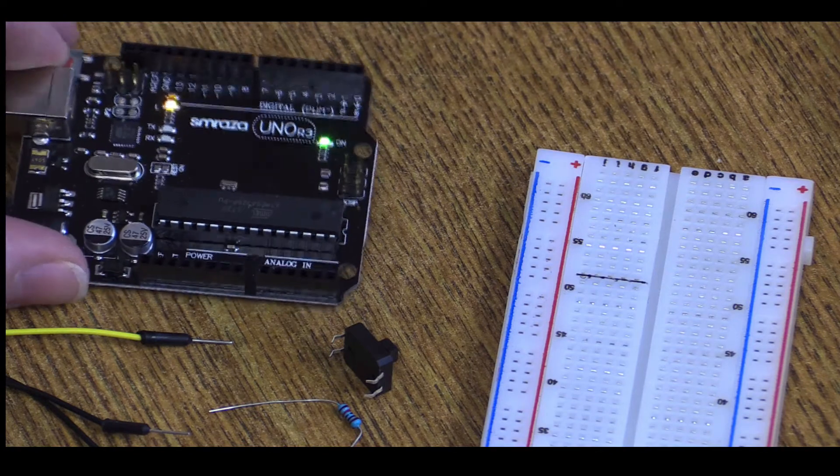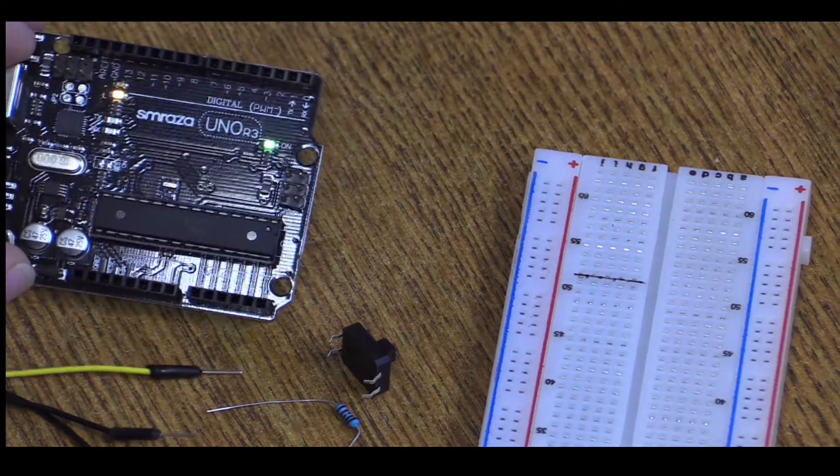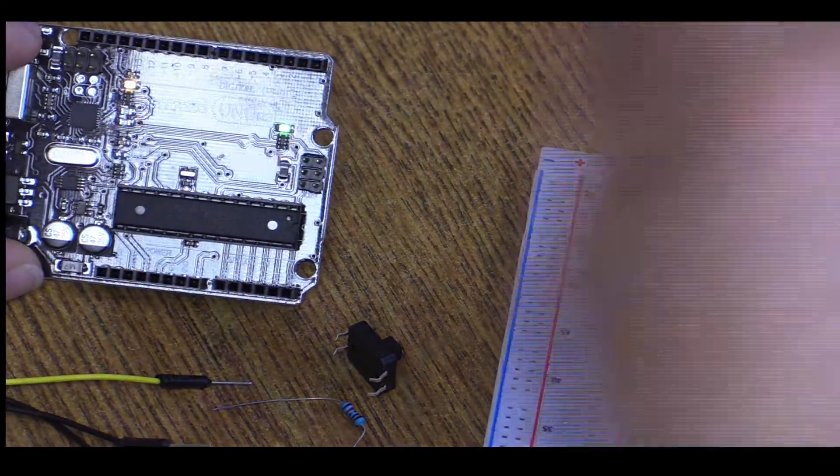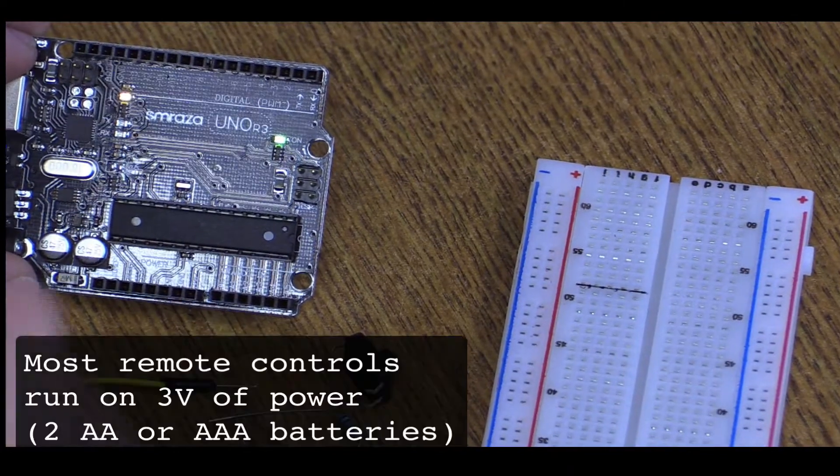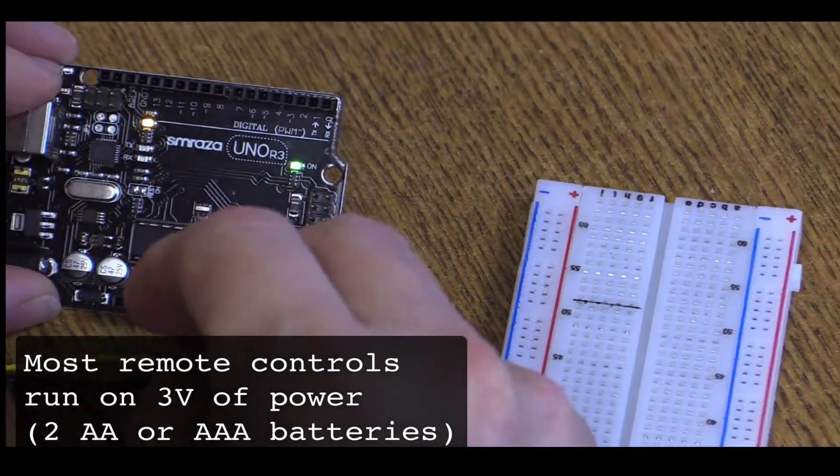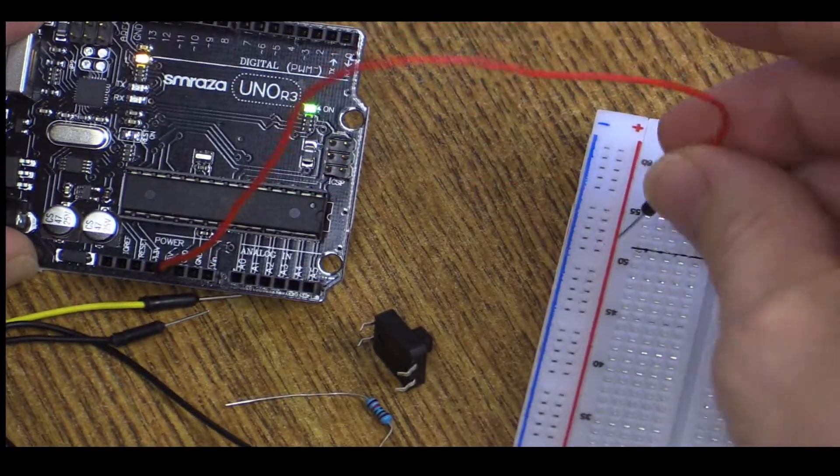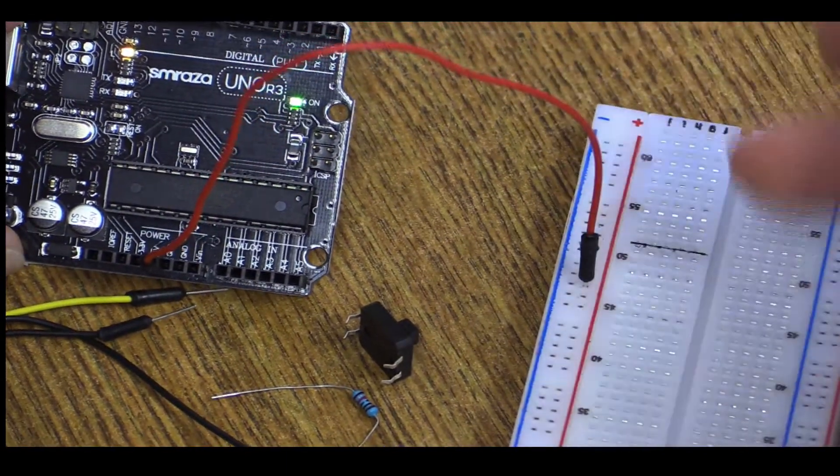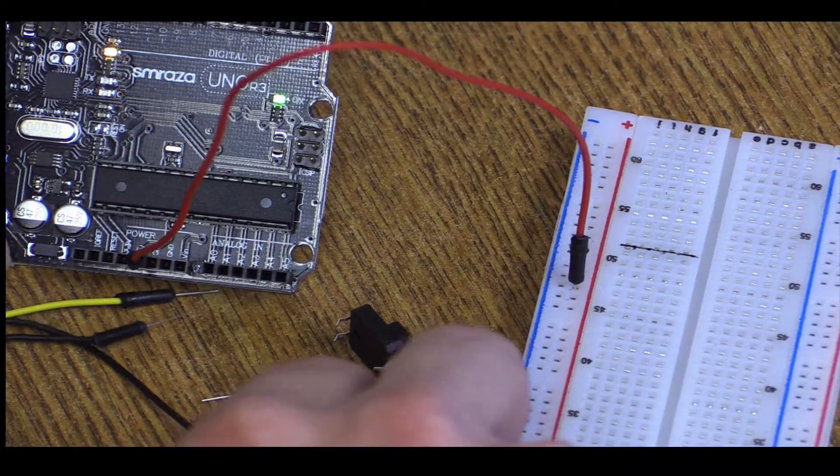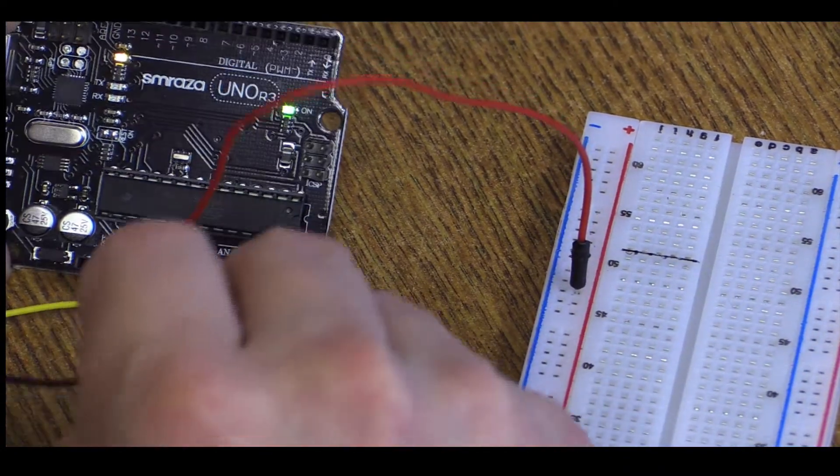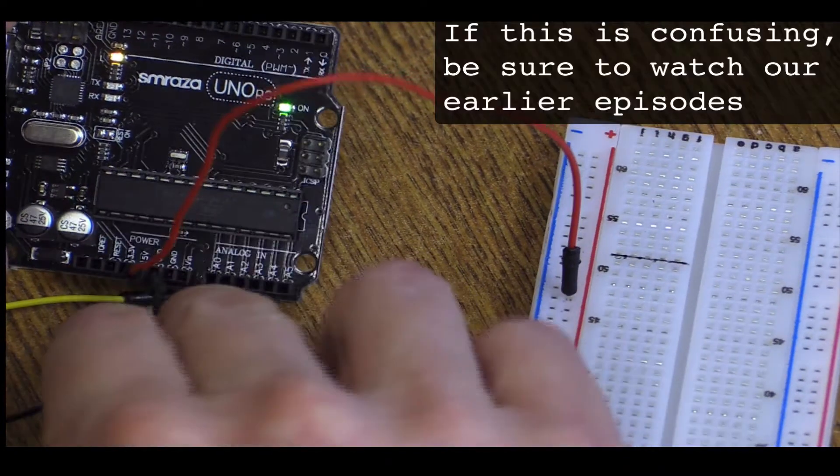So the first thing we need to do is take a look at our Arduino, and we're going to connect our Arduino up to our breadboard. We're going to take our power and hook it up to the positive part of the breadboard. That makes that whole plus line now power. Do the same thing with the ground, so we'll connect it to GND on the breadboard.